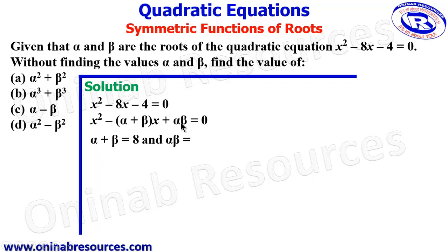and alpha beta, which is alpha times beta, equals negative 4. So this is it here. So we then go ahead to use this information to evaluate the value of each of the following.